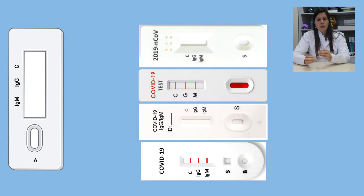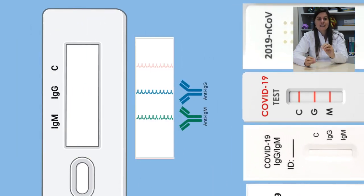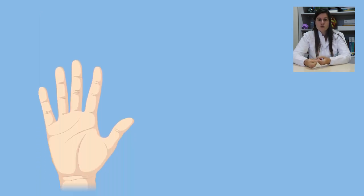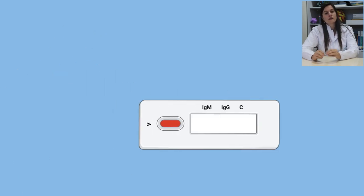Vamos para um passo a passo para entender bem o que acontece. O princípio desse teste consiste em anticorpos anti-IgG e anti-IgM humanos imobilizados na membrana de nitrocelulose, nas regiões teste, onde está escrito aqui IgG e IgM, respectivamente. A amostra de sangue de punção digital é coletada e uma quantidade X é colocada no local indicado na área A. Em seguida, a solução tampão é colocada sobre a amostra.